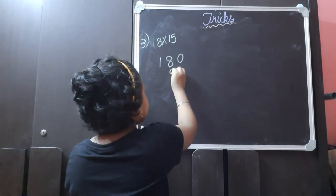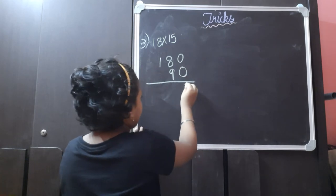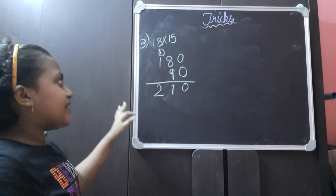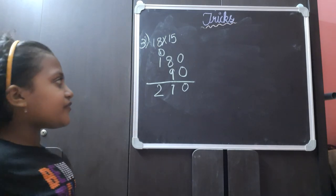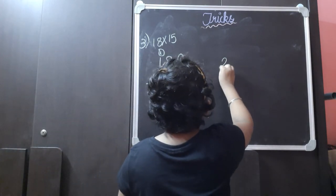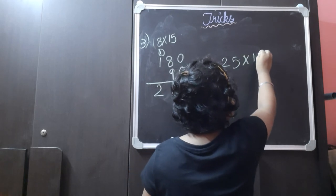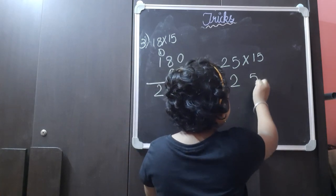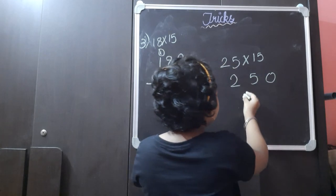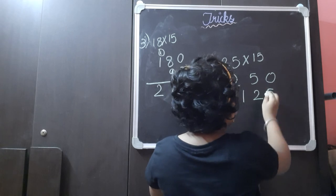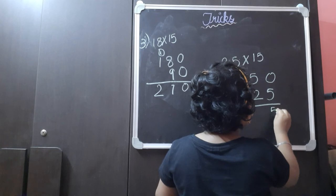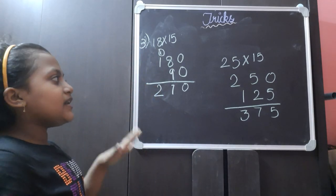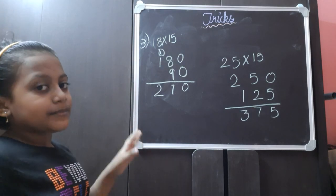Then we find half of 180, which is 90. We add these two numbers and get the answer 270. 270 is the answer for 18 into 15. For another example, 25 into 15: place a 0 after 25 to get 250, half of 250 is 125, and adding them gives 375. 375 is the answer for 25 into 15. This was the method for multiplying with 15.